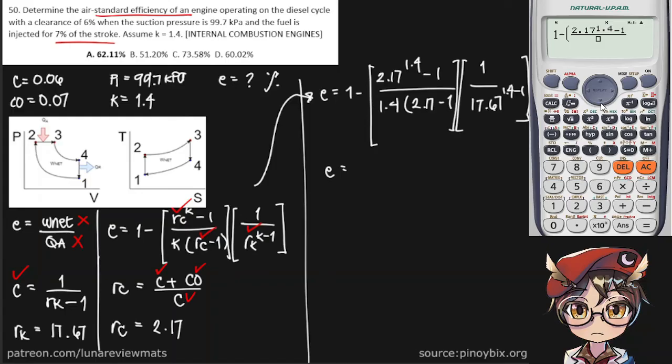We put down 1 minus, 0.4, 2.17 minus 1, and finally 1 over 17.67 raised to K, 1.4 minus 1. And we get 62.1%. A is the closest, so that is our final answer.